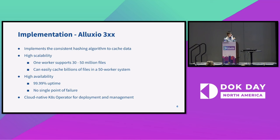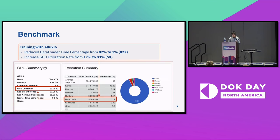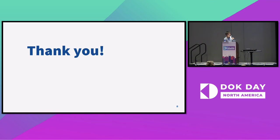With no single point of failure, we can guarantee 99.99% uptime, and we also have a cloud-native Kubernetes operator for deployment and management. We ran an end-to-end CV training with PyTorch on a subset of ImageNet. By reading data from Alluxio, we reduced the data loader time percentage from 82% down to only 1%, and increased GPU utilization from 17% to 93%. This is a huge improvement.